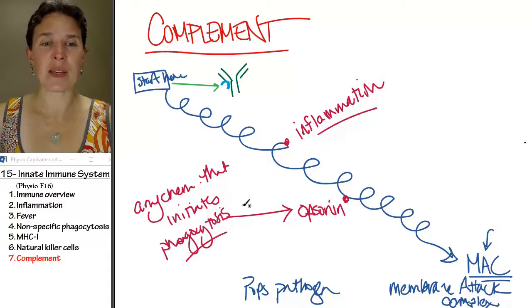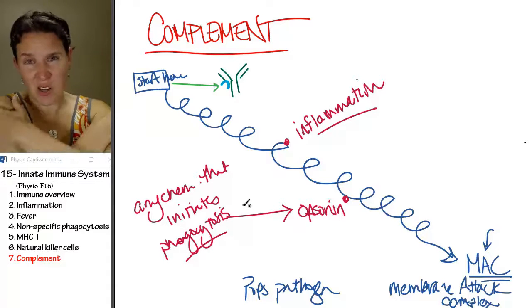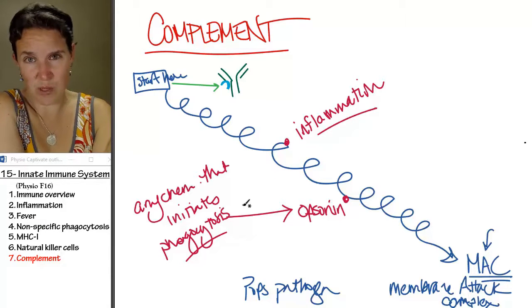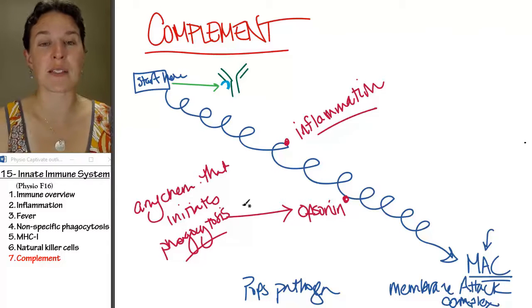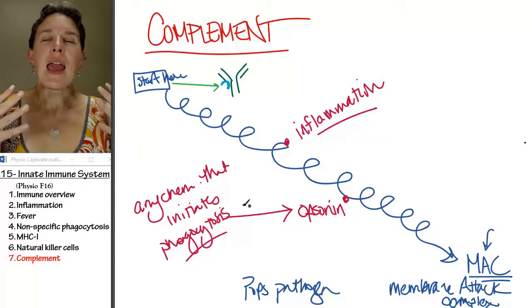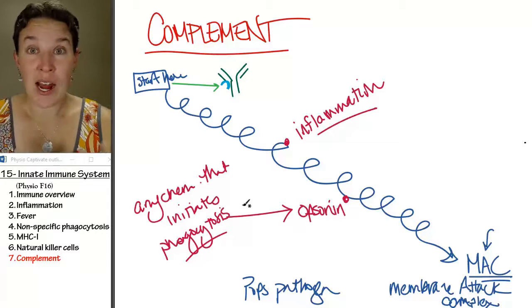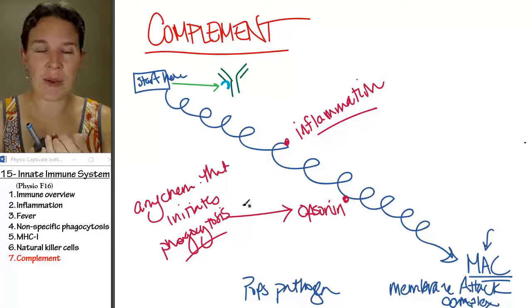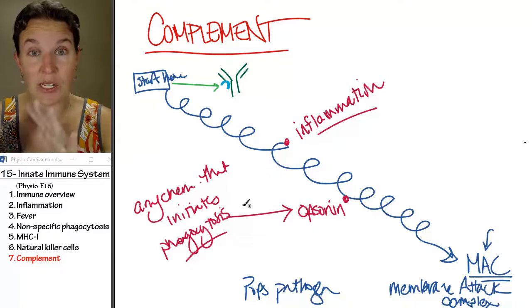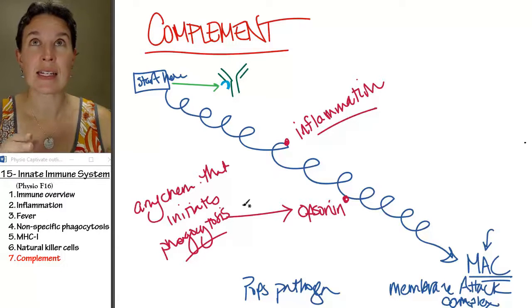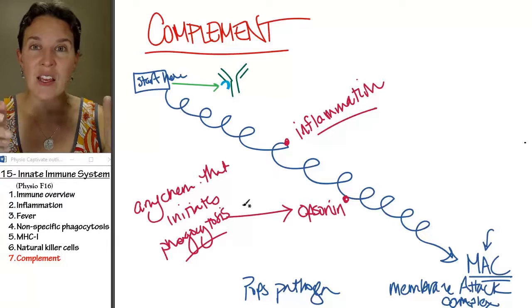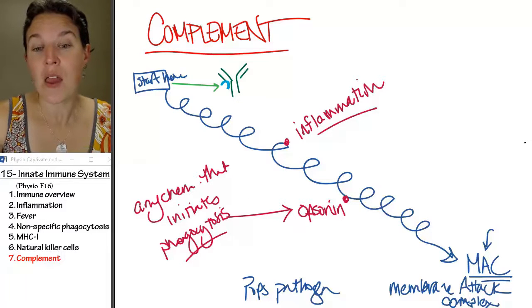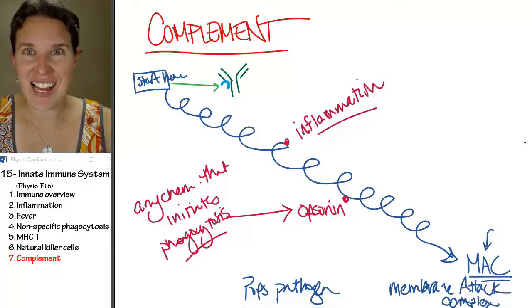So we're basically creating a chemical doo-doo storm when we have an immune response. And even though we've separated out innate and acquired, they absolutely overlap. The next lecture we're going to talk about the acquired immune response and highlight those places where there actually is significant overlap.